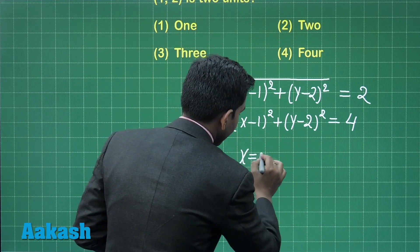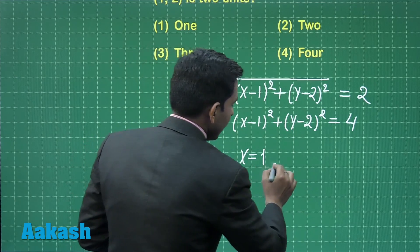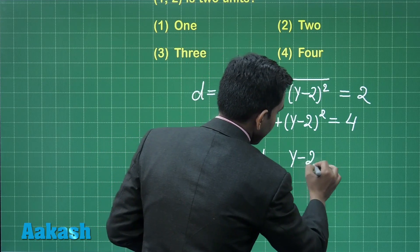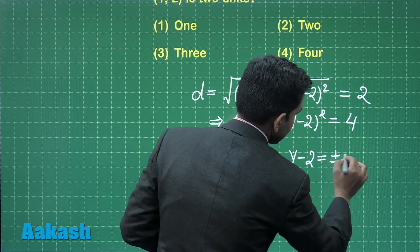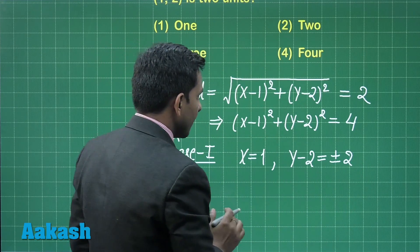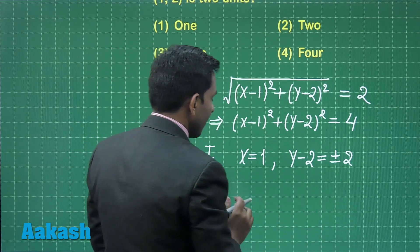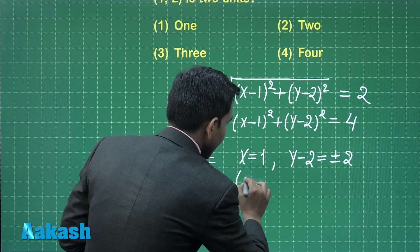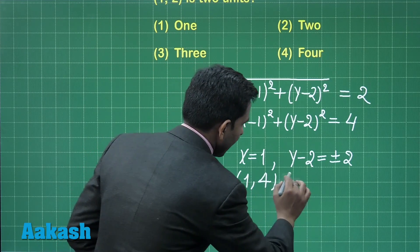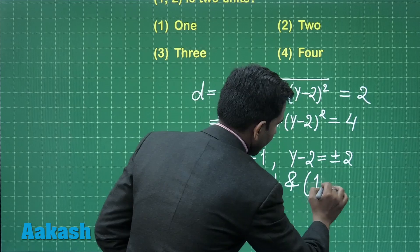In that condition, we get x equals 1 and y minus 2 equals plus or minus 2. So we get two different coordinates: (1, 4) and (1, 0).